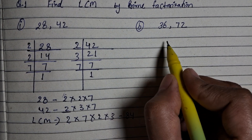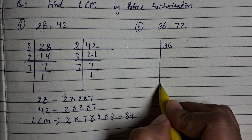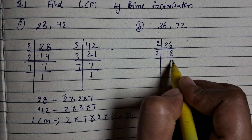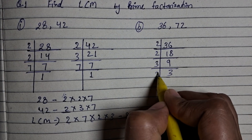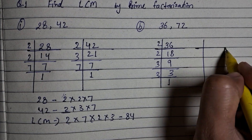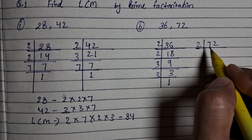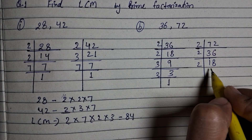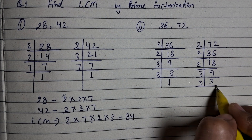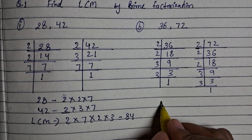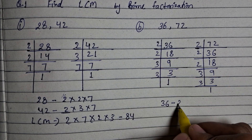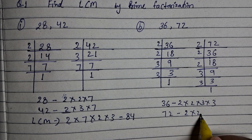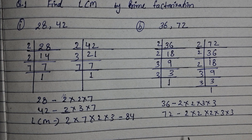Now let's do part B: 36 and 72. For 36: divide by 2 to get 18, by 2 to get 9, by 3 to get 3, by 3 to get 1. For 72: divide by 2 to get 36, by 2 to get 18, by 2 to get 9, by 3 to get 3, by 3 to get 1. So 36 = 2 × 2 × 3 × 3 and 72 = 2 × 2 × 2 × 3 × 3.